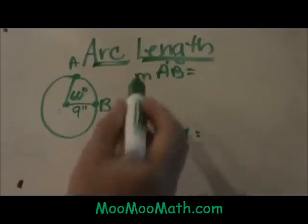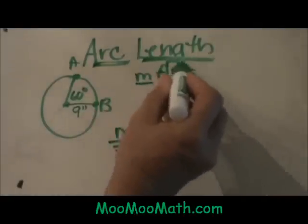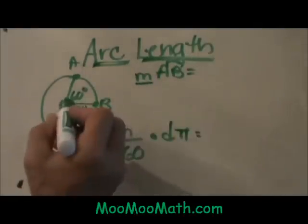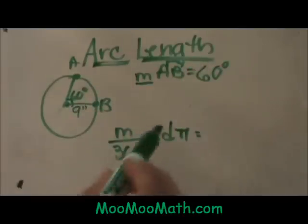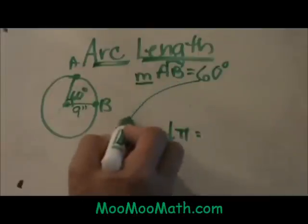The first thing we need to do is to know the measure of the arc. We know the measure of the arc is 60 degrees because the central angle is 60 degrees. Then we will take that and plug it into our formula.